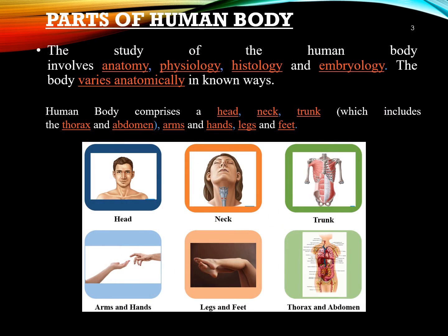Human body involves anatomy, that means the study of the structure of the human body. Physiology involves the study of the functions of the human body. Histology is the study of microscopic structures of tissues. Embryology is the branch of biology which deals with the study of embryos and their development. The human body comprises a head, neck, trunk which includes thorax and abdomen, arms and hands, and legs and feet, which are collectively called limbs.